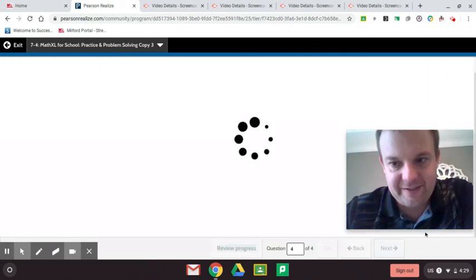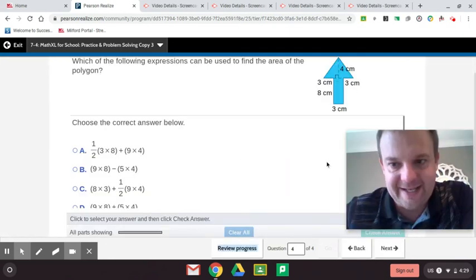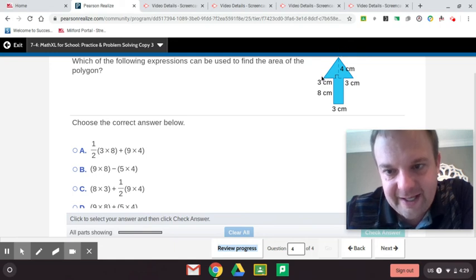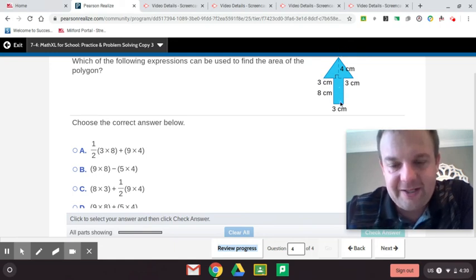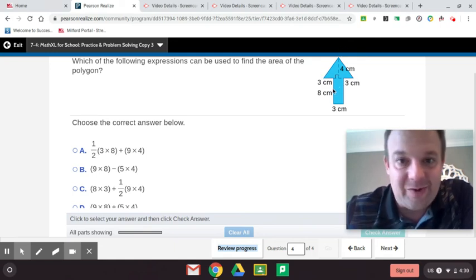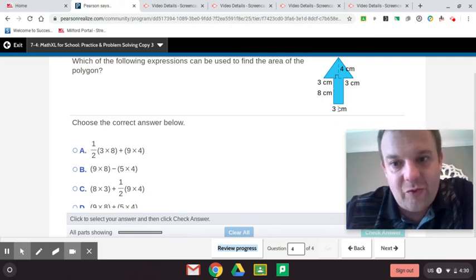And the next one is a very interesting shape because it has a triangle. Can you guys see that triangle there and a rectangle? So let's start with the easy one. Let's do the rectangle first guys. So three times eight is 24, 24 centimeters squared.